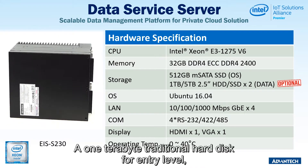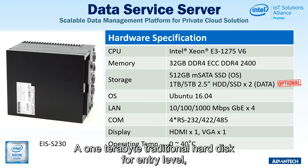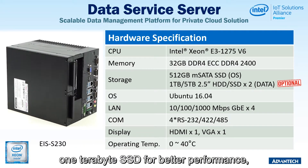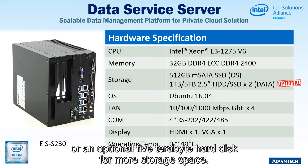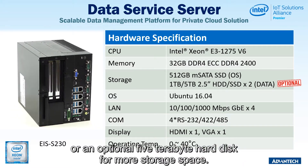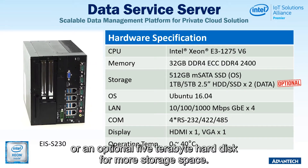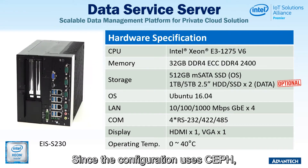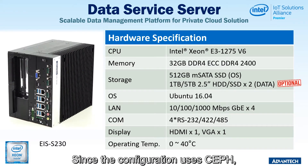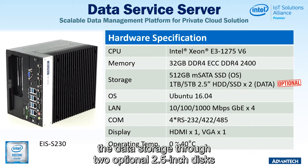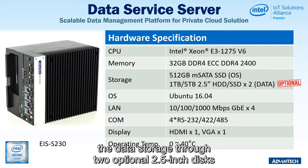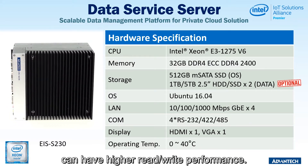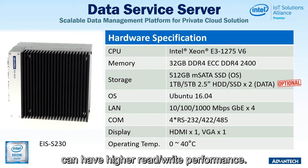A 1 TB traditional hard disk for entry-level, 1 TB SSD for better performance, or an optional 5 TB hard disk for more storage space. Since the configuration uses CEPH, the data storage through two optional 2.5-inch disks can have higher read-write performance.